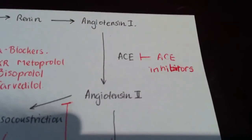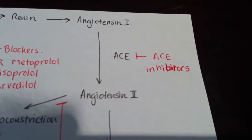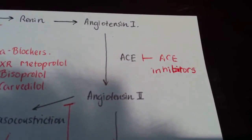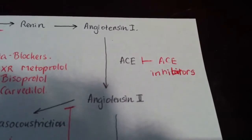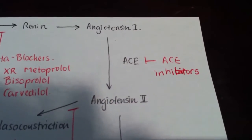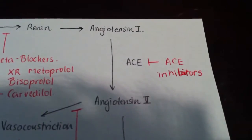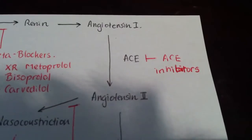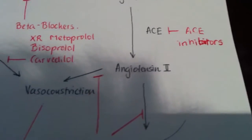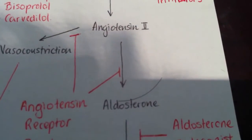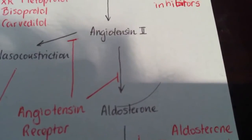With the angiotensin pathway, we can use an ACE inhibitor to stop the conversion of angiotensin 1 to angiotensin 2. So we don't get vasoconstriction and we have less release of aldosterone.